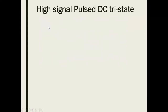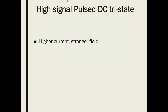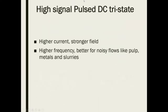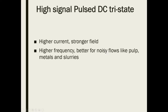The fourth type is high signal pulse DC tri-state, essentially the same as pulse DC tri-state but with a higher current creating a stronger magnetic field, and a higher frequency. This makes it better for noisy flows like pulps, metals, and slurries. We'll talk more about noisy flows in a different lecture in this flow section.